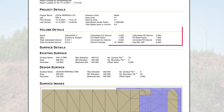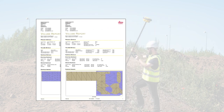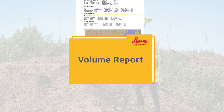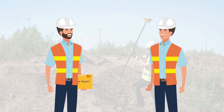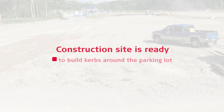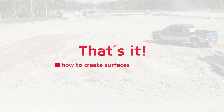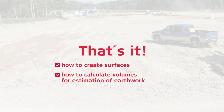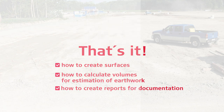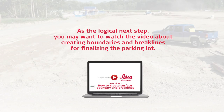A look at the second day's report shows that this work can also be confirmed as done. We hand over the reports to the construction manager. The construction site is ready for the following tasks. We will build the curbs on the boundary of the parking lot and layers of gravel and asphalt. You have learned how to create surfaces, calculate volumes for estimation of earthwork and create reports for documentation of the progress. As a logical next step, you may want to watch the video about creating boundaries and brake lines for finalizing the parking lot.